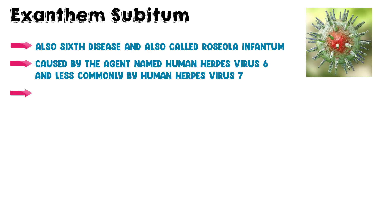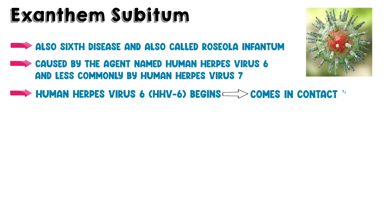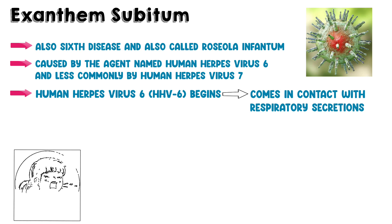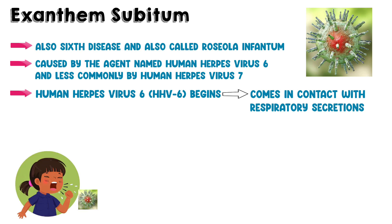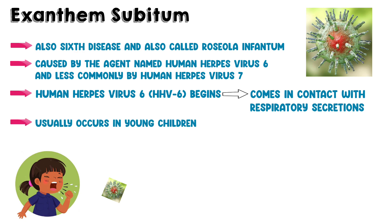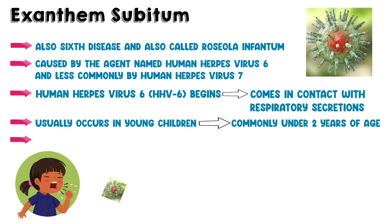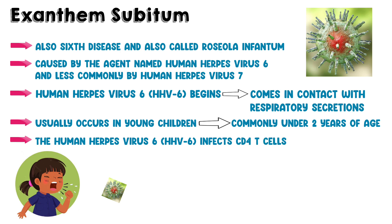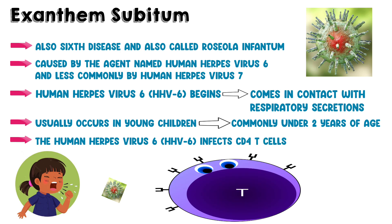The human herpes virus 6 infection begins when a person comes in contact with the respiratory secretions from another person who contains the virus. Axanthum Subutum really occurs in young children, most commonly under 2 years of age. The human herpes virus 6 infects CD4 T cells and duplicates there efficiently.